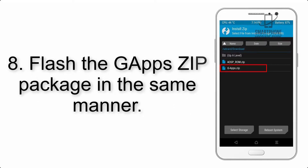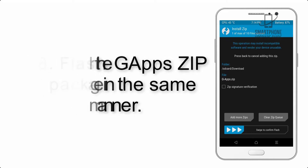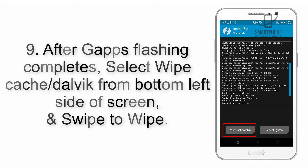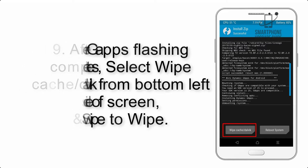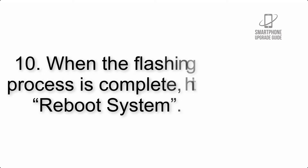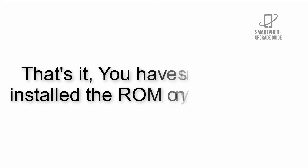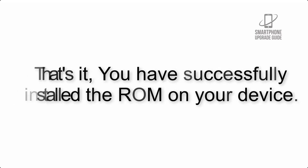Step 8: Flash the GApps zip package in the same manner. Step 9: After GApps flashing completes, select Wipe Cache and Dalvik from the bottom left side of the screen and swipe to wipe. Step 10: When the flashing process is complete, hit Reboot System.